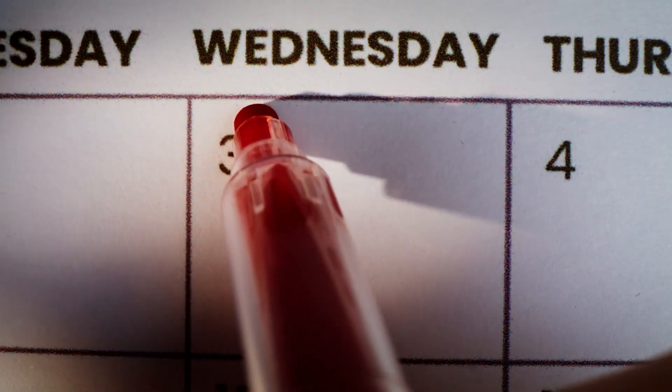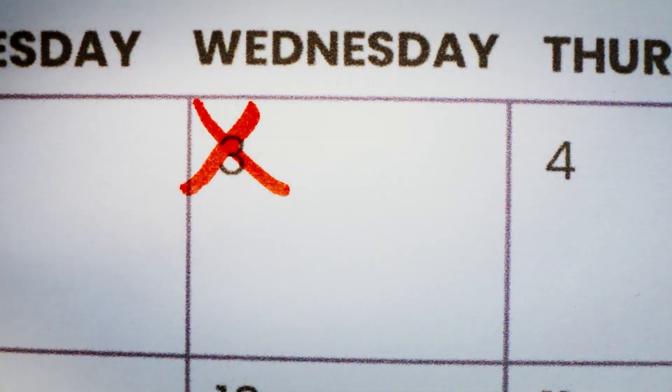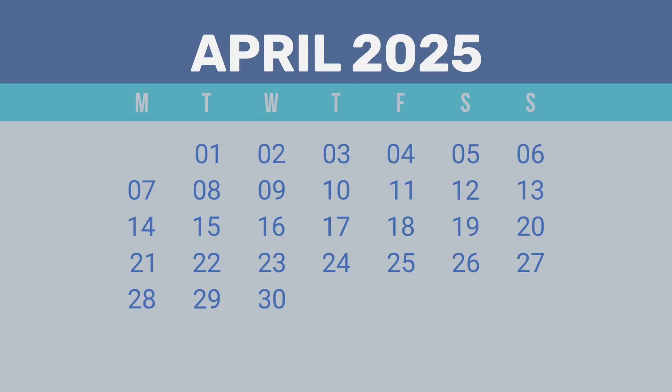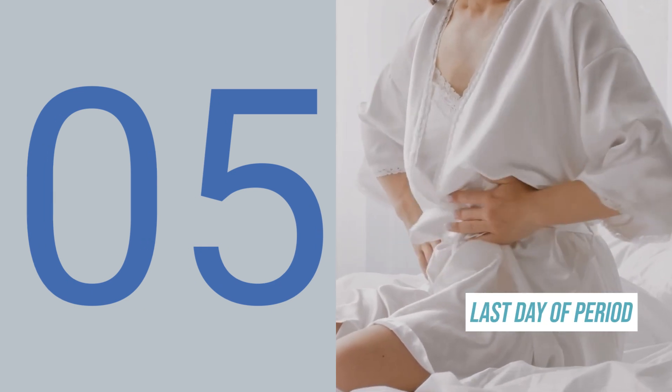On the calendar on April 1st, you're going to write 'period starting' or 'day one of your period.' Then you're going to calculate how many days you're bleeding for. If the average person bleeds for about five days, that would mean on April 5th is when you stopped bleeding, so you're going to put 'period end.'